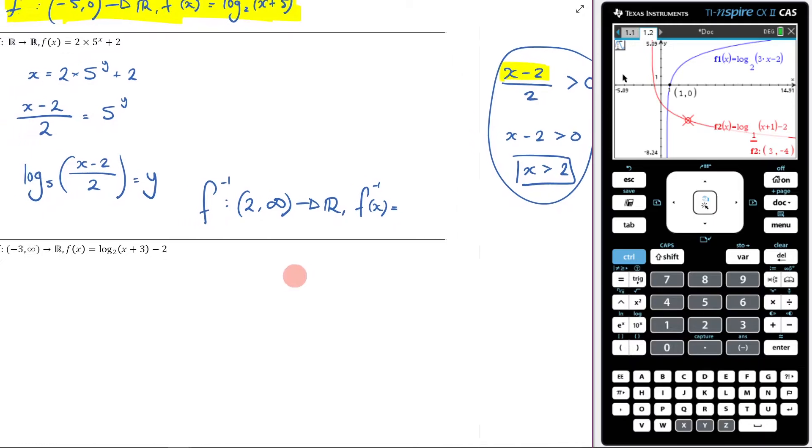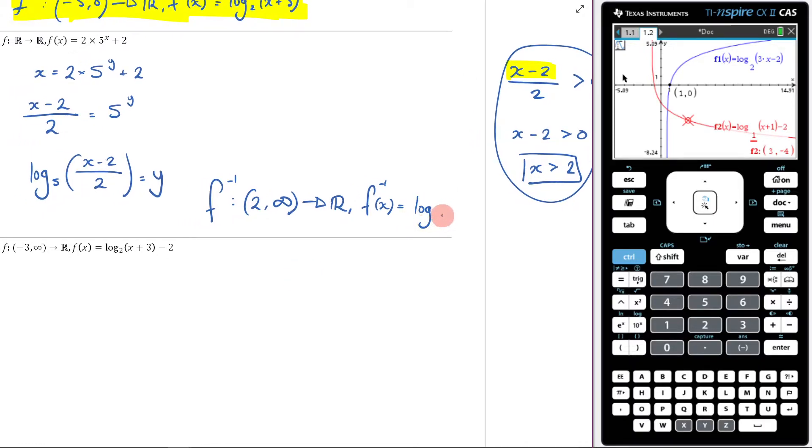Then this is going to be log of base 5 of x minus 2 over 2. And there it is right there.